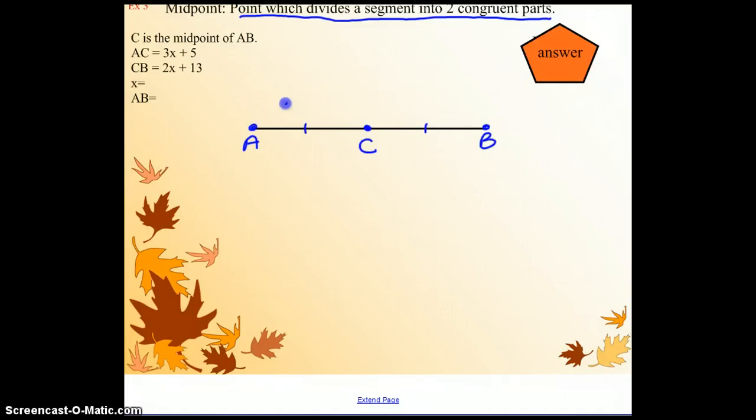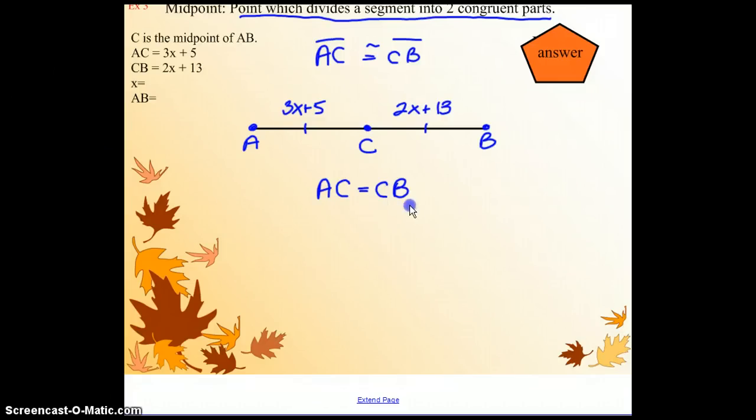AC is 3X plus 5. CB is 2X plus 13. If we notice, we don't have three pieces of information like the last two examples. But what we do know is that these segments, which we know to be congruent, translates that they have equal length. So we know that AC equals CB.